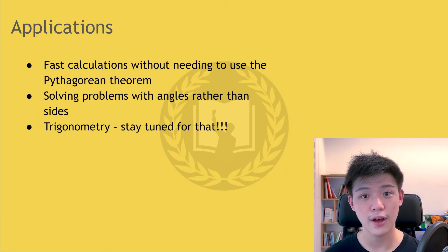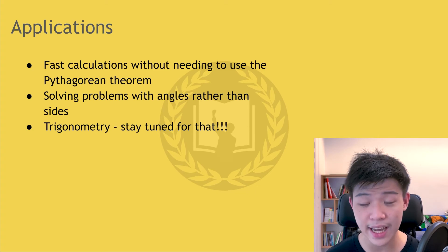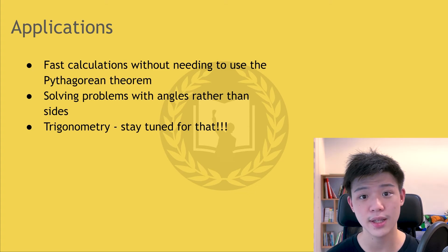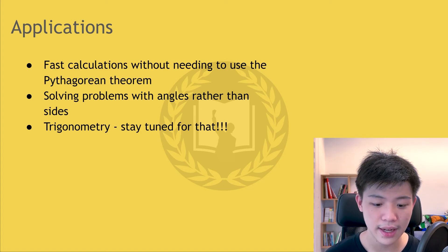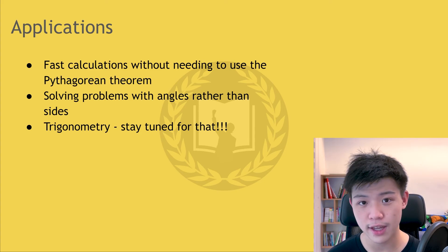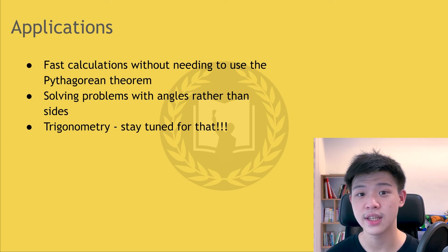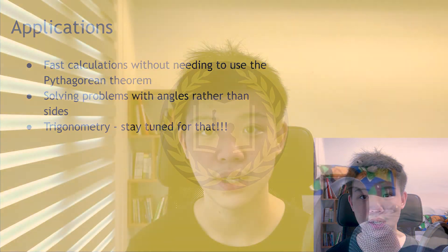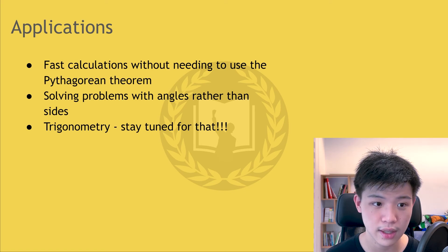Let's talk about some applications of what we covered today. One benefit of knowing special triangles is that we can do fast calculations without needing to use the Pythagorean theorem, which sometimes takes a lot of time — for example, if you have a 4 and a 7, you need to root a very weird number. Second, you can solve problems with angles rather than sides. In 30-60-90 and 45-45-90 triangles, you only need one side to know all three sides, whereas in an ordinary triangle you would need two sides. And lastly, right triangles are extremely important in trigonometry. The last benefit to knowing these special triangles is its application in trigonometry, so stay tuned for that video.